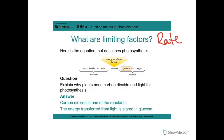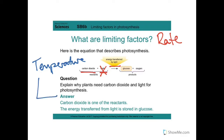The limiting factors that can speed up and slow down photosynthesis are carbon dioxide, water — which we don't really need to worry about because we always assume it's there — light, and temperature. How temperature affects photosynthesis is basically like enzymes: the enzyme shape denatures and so on. We'll go over it anyway.